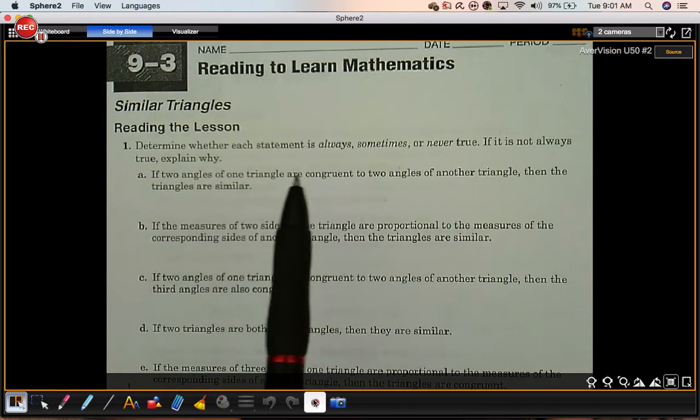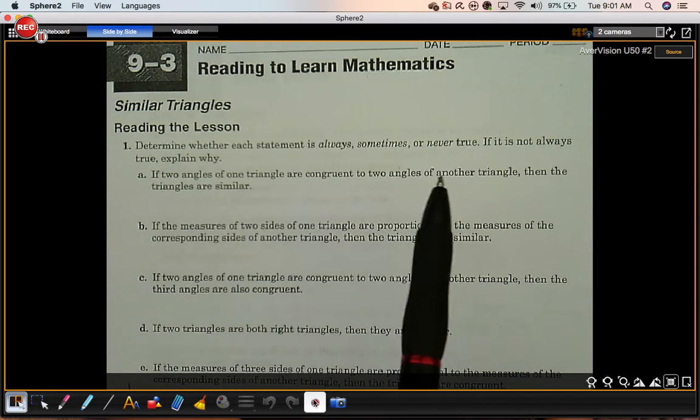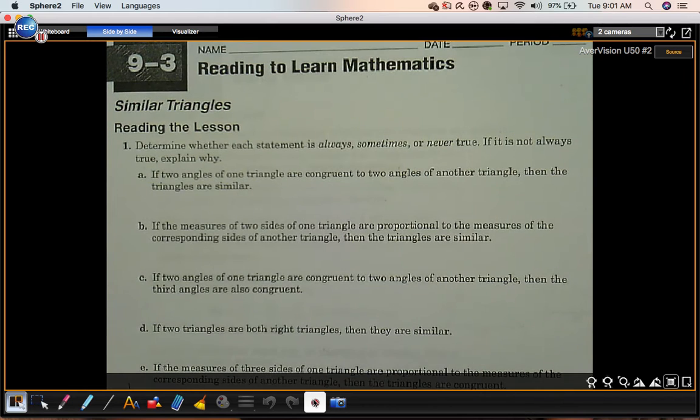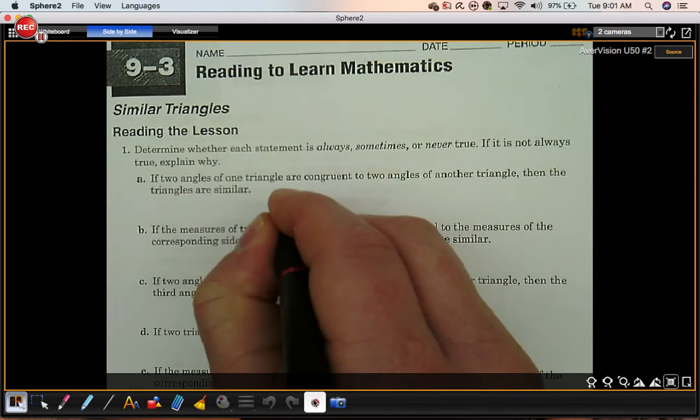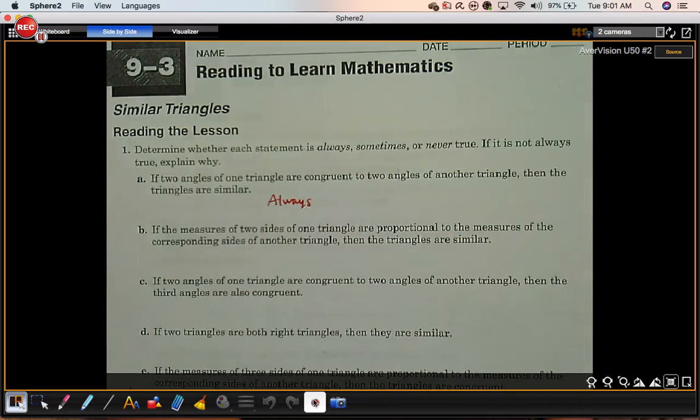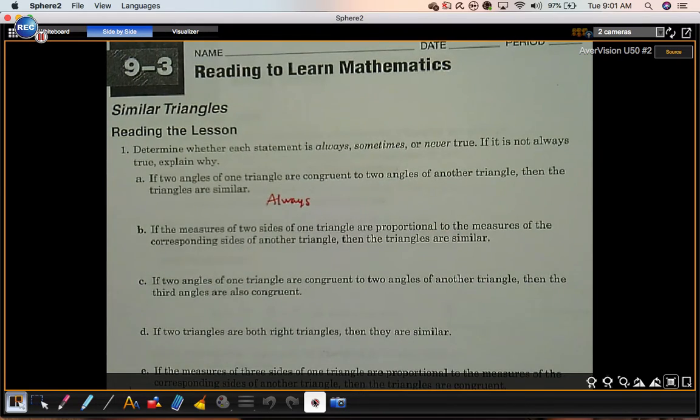If two angles of one triangle are congruent to two angles of another triangle, then the triangles are similar. That's always. What they just told you was the angle-angle shortcut.